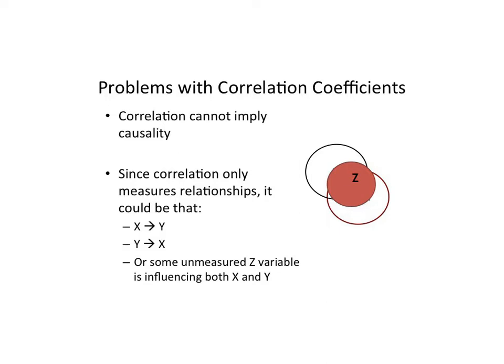As we can see in this visual, we have two different variables — x and y. It could be that x causes y, it could be that y causes x, or because correlation only looks at relationships between x and y, we don't know if some other z variable that we haven't measured yet has come in and replaced that factor. We have to consider that the relationship is actually being caused by some form of outside factor. A common example you'll see in textbooks is the relationship between math content knowledge and shoe size amongst middle school age and elementary school age children.